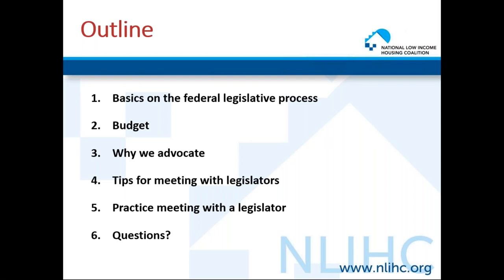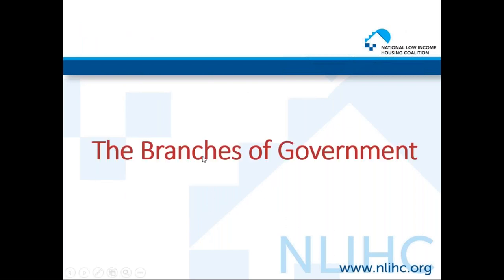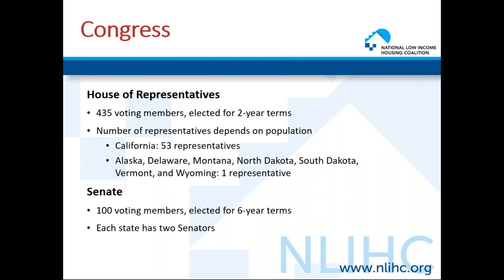Let's begin with a brief overview of the legislative process. There are three branches of the federal government: the legislative, executive, and judicial. Today, we will be focusing on two — the legislative branch, which is better known as Congress, and the executive branch, which is often referred to as the White House, the administration, or the president. Congress is made up of two chambers, the House of Representatives and the Senate. The House of Representatives has 435 voting members plus some delegates who represent U.S. territories and the District of Columbia but do not have voting rights in Congress. Representatives are elected for two-year terms. The number of representatives per state depends on the state's population. California has the largest state population and 53 members, while Delaware and a few other states only have one representative.